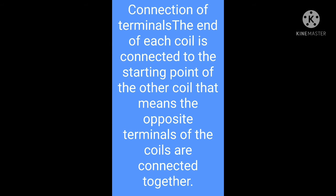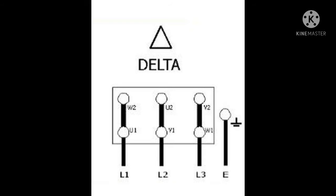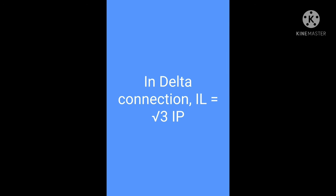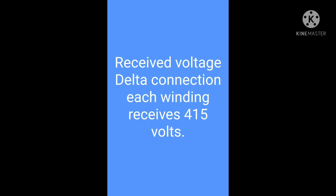In delta connection, the end of each coil is connected to the starting point of the other coil — that means the opposite terminals of the coils are connected together. Delta connection mein har coil ka jo end point hota hai wo doosre opposite coil ka starting point ke saath connected hota hai. In delta connection, line voltage is equal to phase voltage, and line current is equal to root three times of phase current.